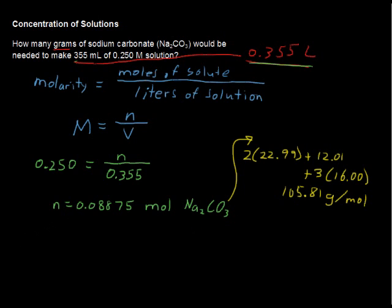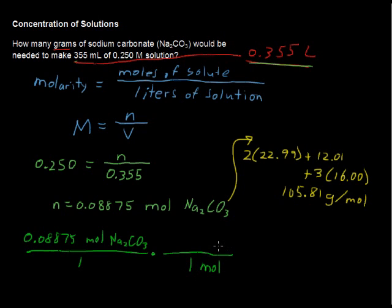Now we'll just convert this, and what we have here is 0.08875 moles of the Na2CO3, and the proper conversion fraction that we're going to multiply by. We want to cancel out moles, so we'll put mole in the denominator, and for every one mole of sodium carbonate, we have 105.81 grams. So the moles will cancel, and we'll be left with grams, just exactly what we wanted. So this equals, now I will round to three decimal places, 9.39 grams of the sodium carbonate, Na2CO3.